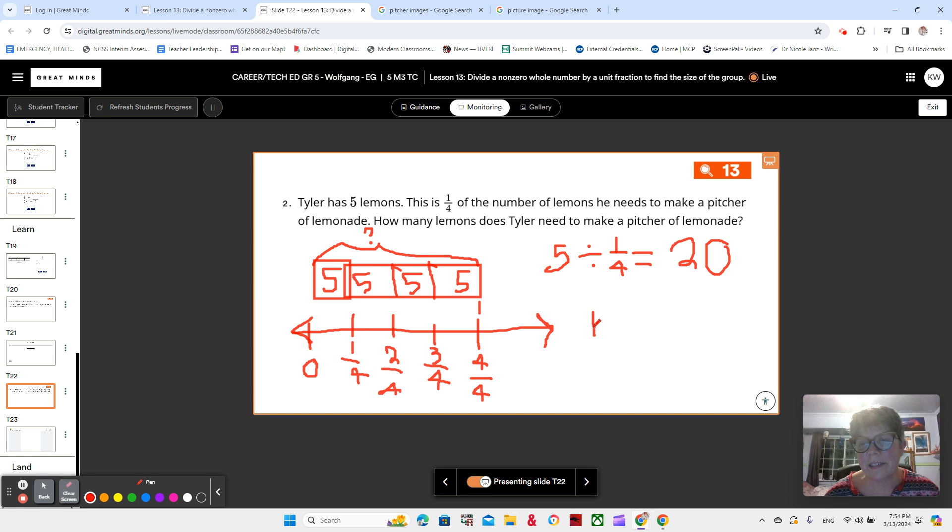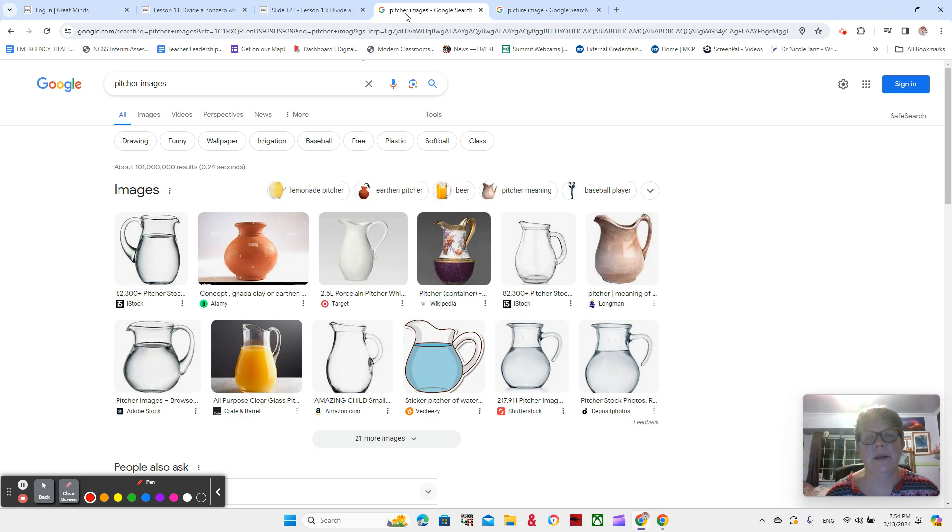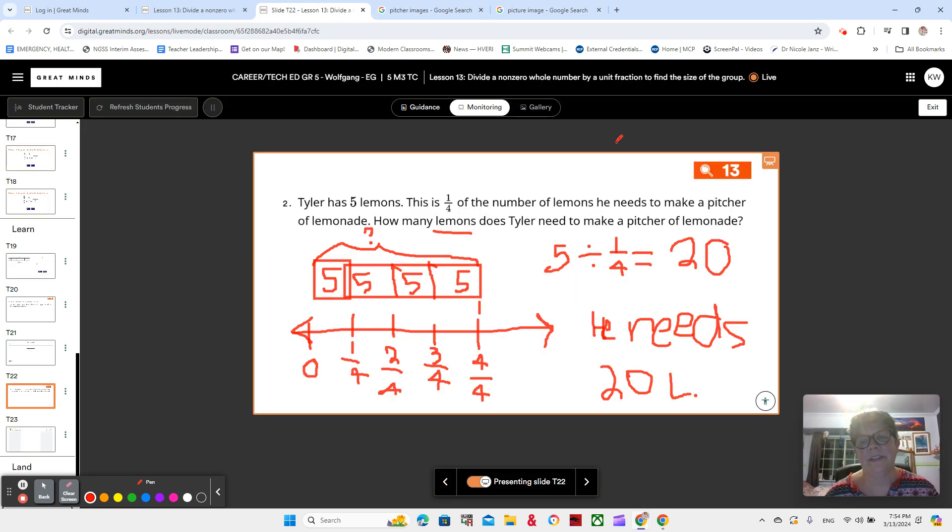Please write the sentence. He needs, you can probably write a lot faster than I can. He needs 20 lemons. 20 lemons. I'm just going to write L, but please write out the word lemons right here. L-E-M-O-N-S to make a pitcher of lemonade. Okay. Awesome job.